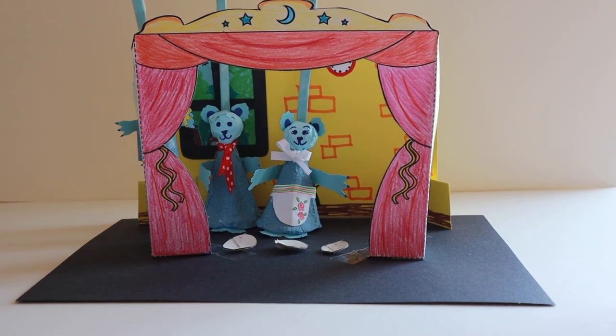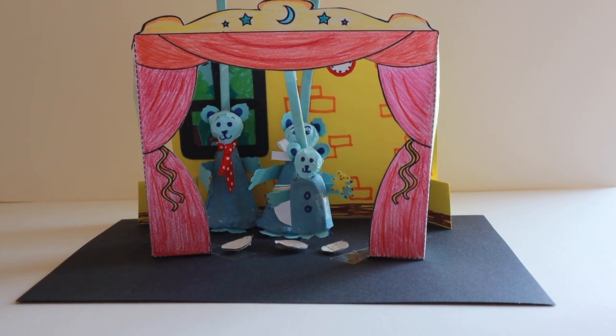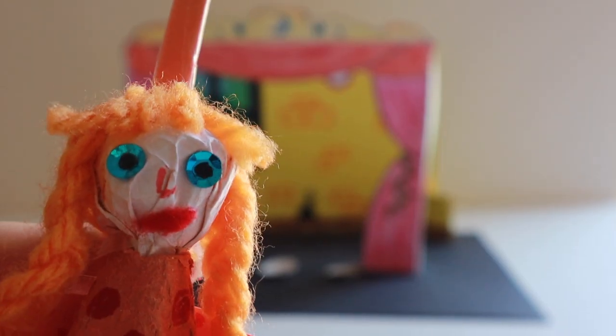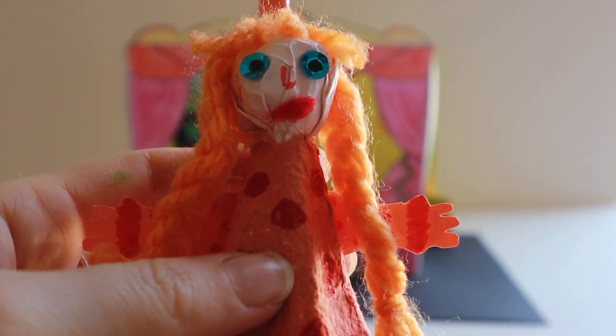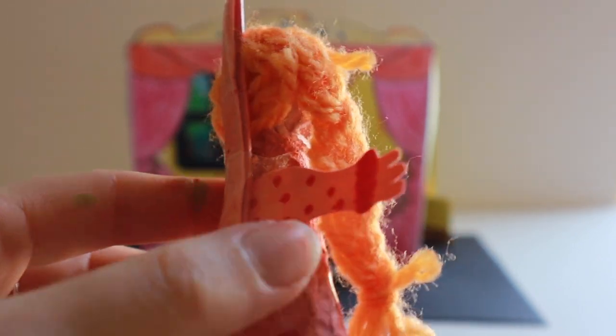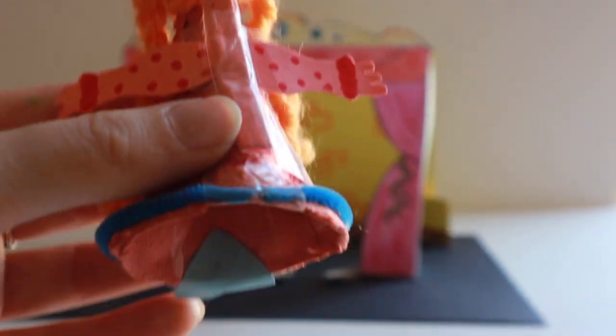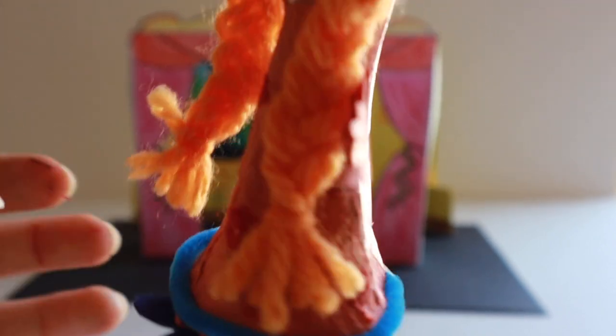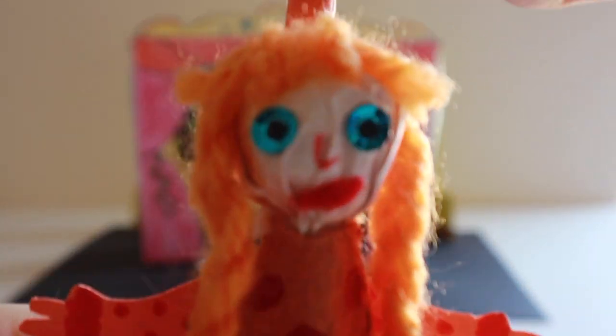But if we've got a family of bears, we also need a Goldilocks. For this character I have used wool for hair and sequins for eyes. You could also use felt or fabric to cover your body. Now we have all the characters we need to tell a story.